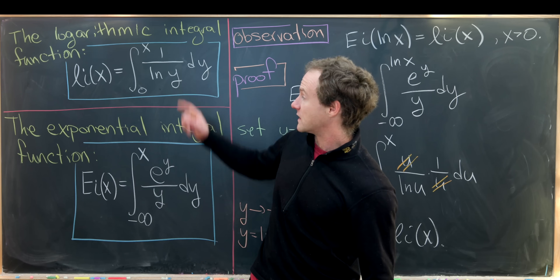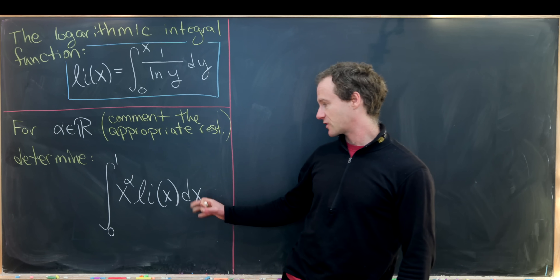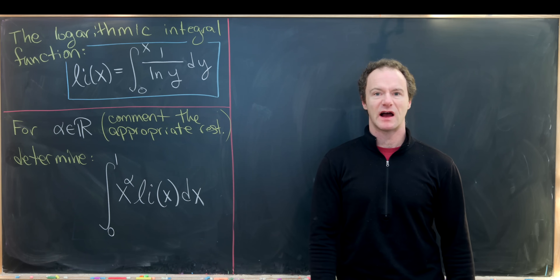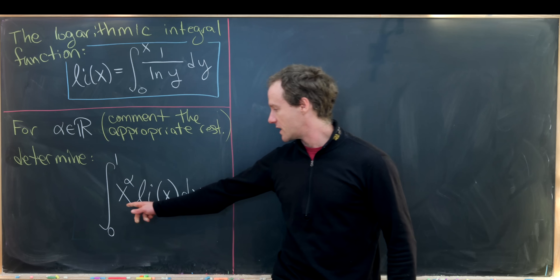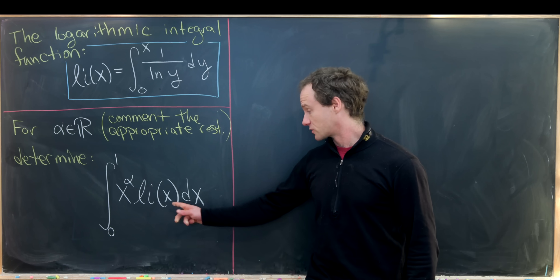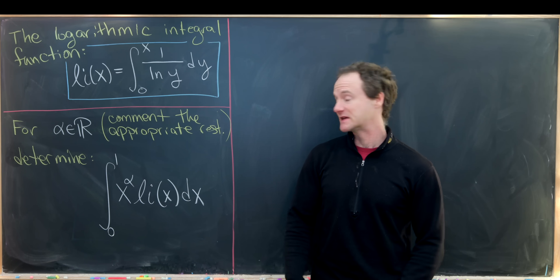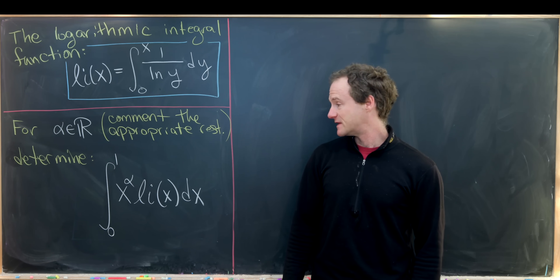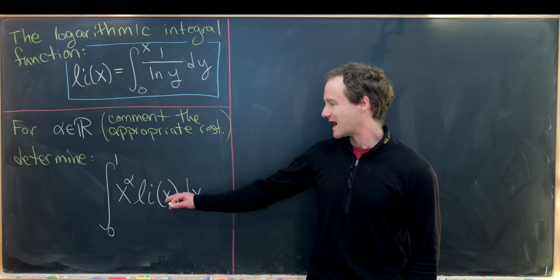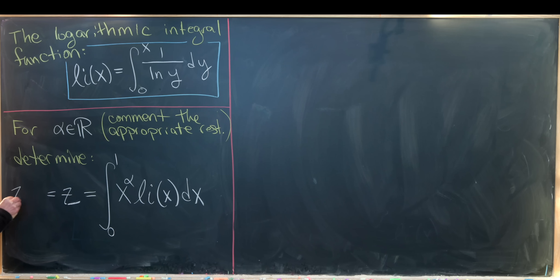Now we'll look at a nice integral involving the logarithmic integral. For real alpha, we want to determine the value of the integral from 0 to 1 of x^α times Li(x) dx. Post in the comments what restriction on alpha is needed, since not all values make sense. We'll use Feynman's technique — differentiating under the integral sign — setting this equal to a function z(α).